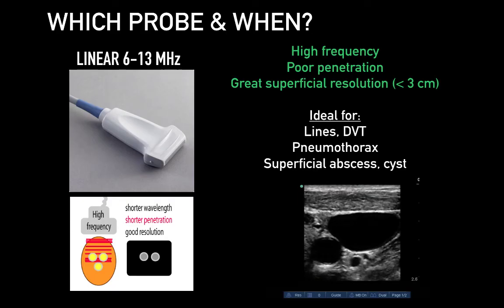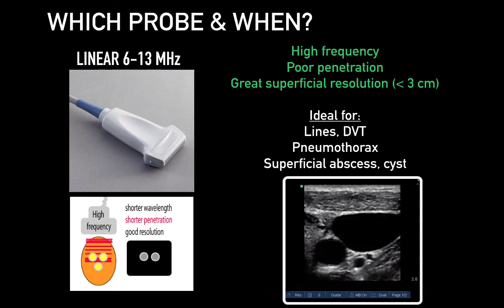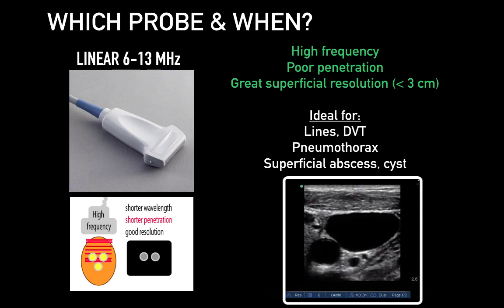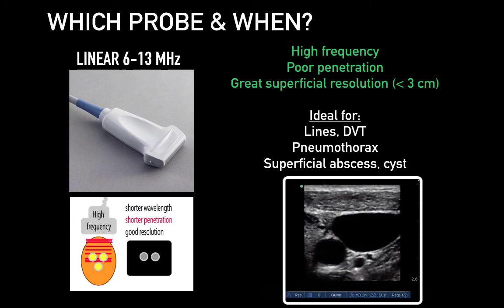So which probe and when? The linear probe is a higher-frequency probe, 6 to 13 MHz — often listed in reverse on the probe as 13, 6, so do not be confused by this. It is a high-frequency, short-wavelength probe and offers great resolution of superficial soft tissue including vessels, pleura, abscess, and cysts. As demonstrated on this 2D image, we can see that really high-quality resolution and visualization of soft tissue.